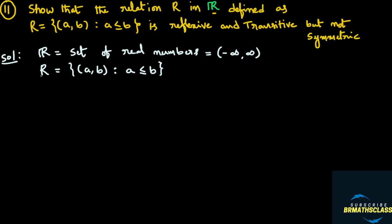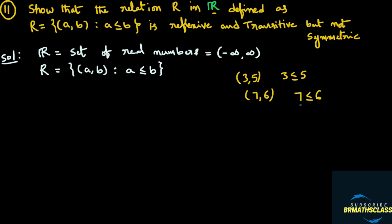What type of ordered pairs are there in the given relation? For example, take ordered pair (3, 5). Is 3 less than or equal to 5? Yes, 3 is less than 5, so the ordered pair (3, 5) is in the relation. Similarly, take (7, 6). Is 7 less than or equal to 6? No, 7 is not less than 6, so the ordered pair (7, 6) does not belong to the relation.